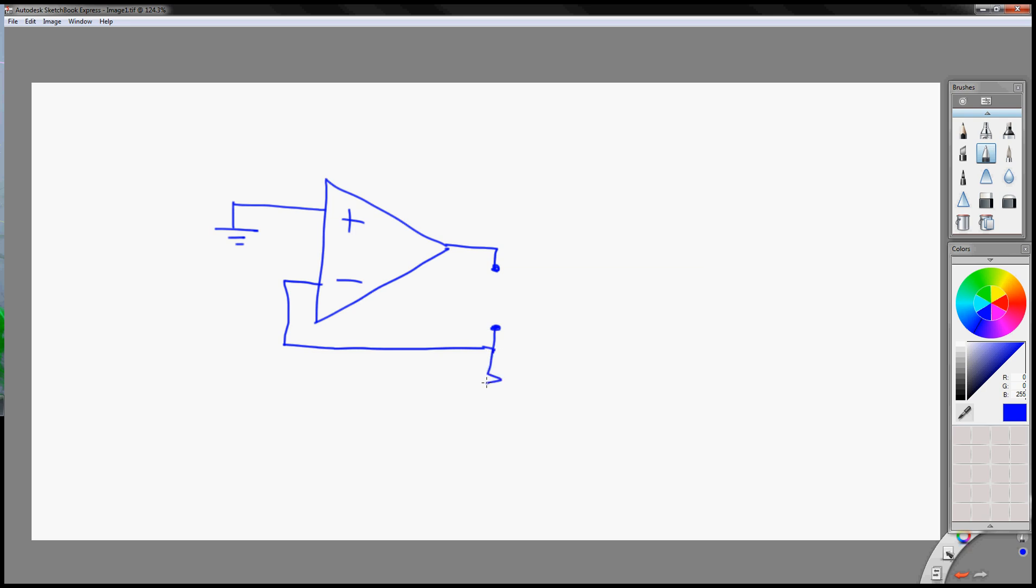And this part is where you will connect your variable resistor. You can use a potentiometer for this part. And connect your minus supply voltage to this terminal.